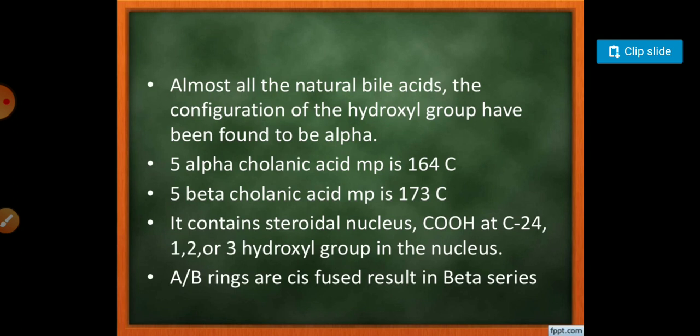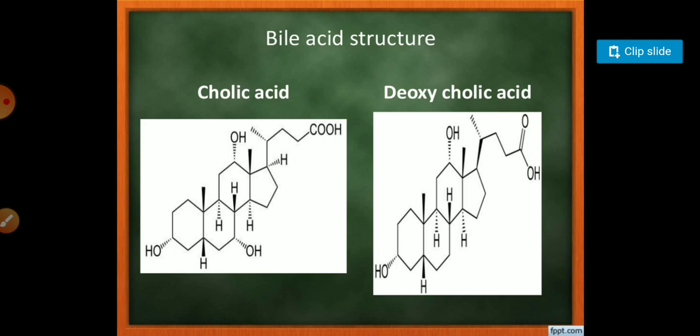The ring fusion is A with B ring fusion, which is cis-fused and results in the beta series. Here you can see the orientation of the bile acid structure.